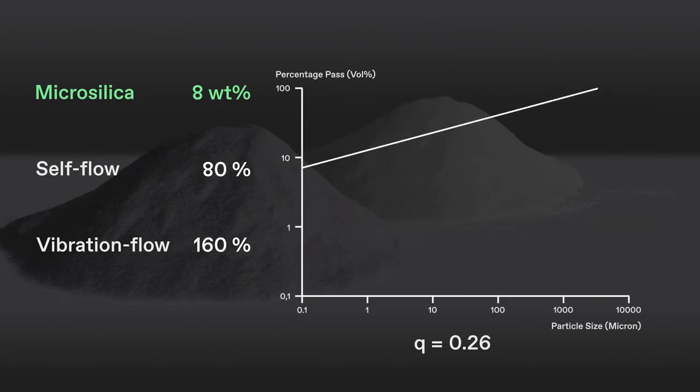With 8 weight percent addition of Elkem microsilica, the mix has a Q value of 0.26. Note that the surface becomes shiny, and there is an excess of liquid which facilitates self-flow, resulting in a high self-flow value of 80% and 160% vibra-flow.